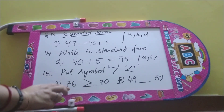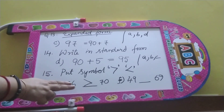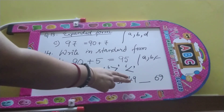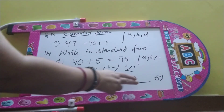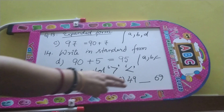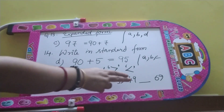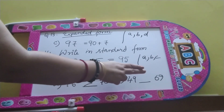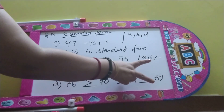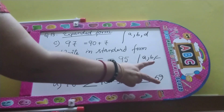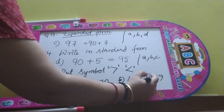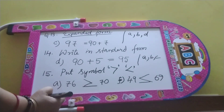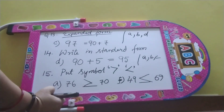After eating, he has gone to question F. Here he has seen 49 and 69. Which one is the bigger number? 69 is the bigger number. So again he has opened his mouth like this to eat it. Understood? Fine.